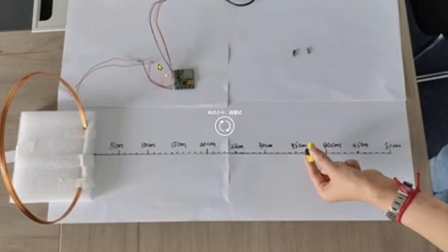This RFID module is a low-frequency RFID application connecting with an antenna. I have a scale on paper so you can easily recognize the reading distance. I will use various RFID tags to show you the difference.